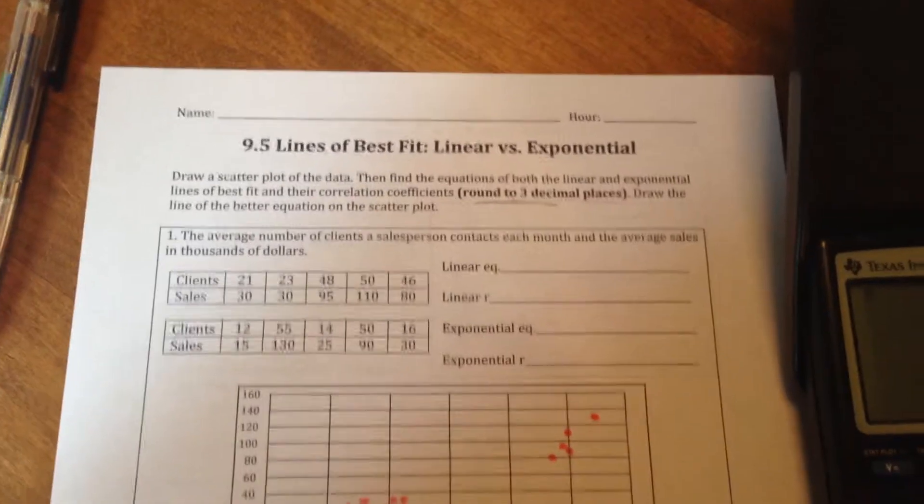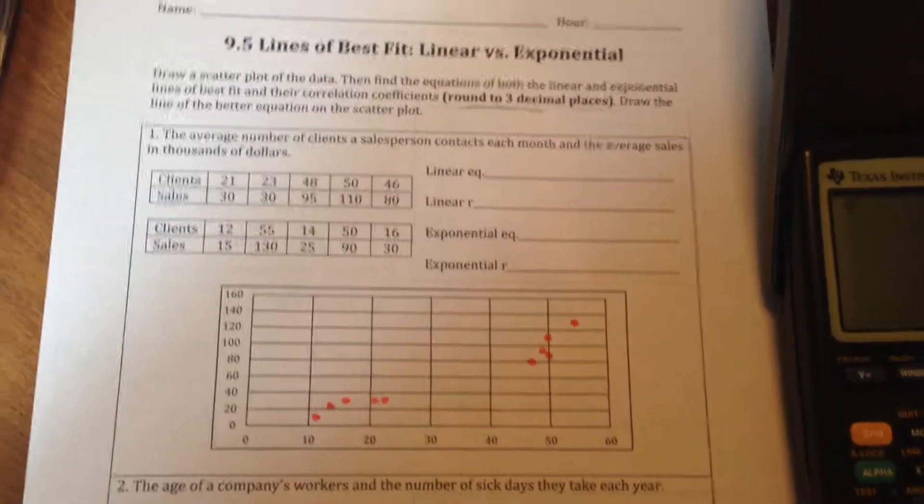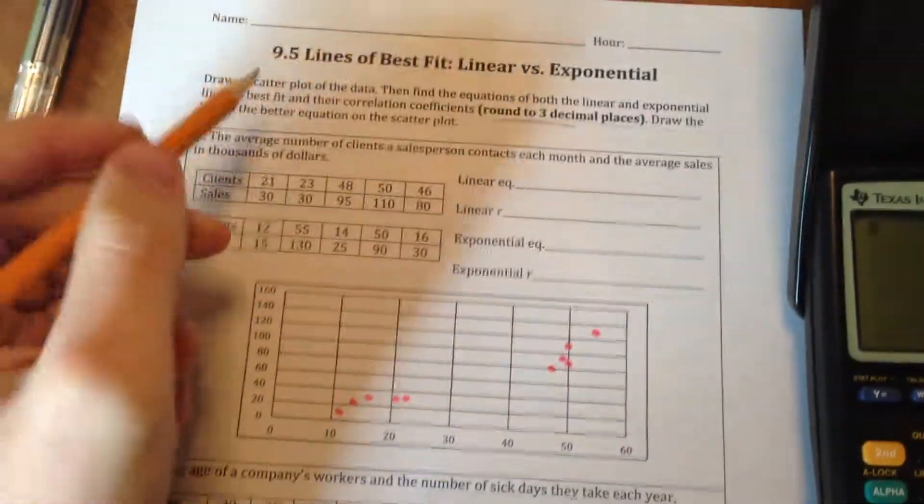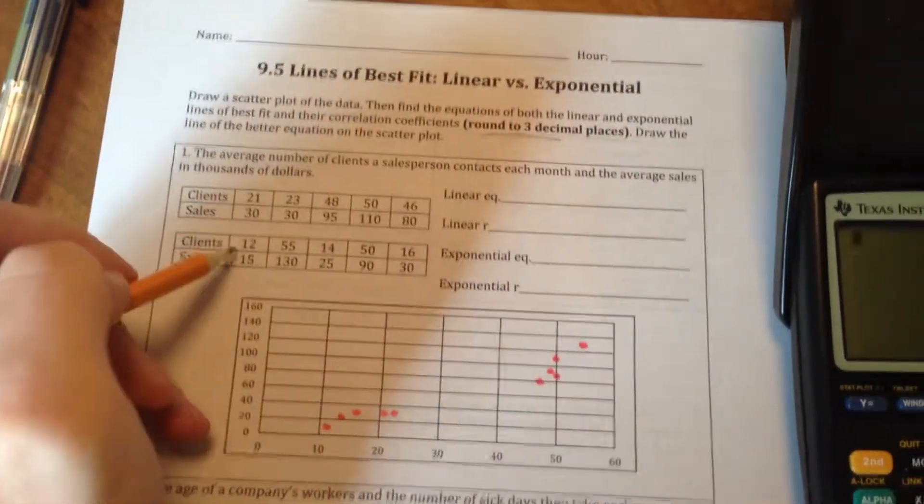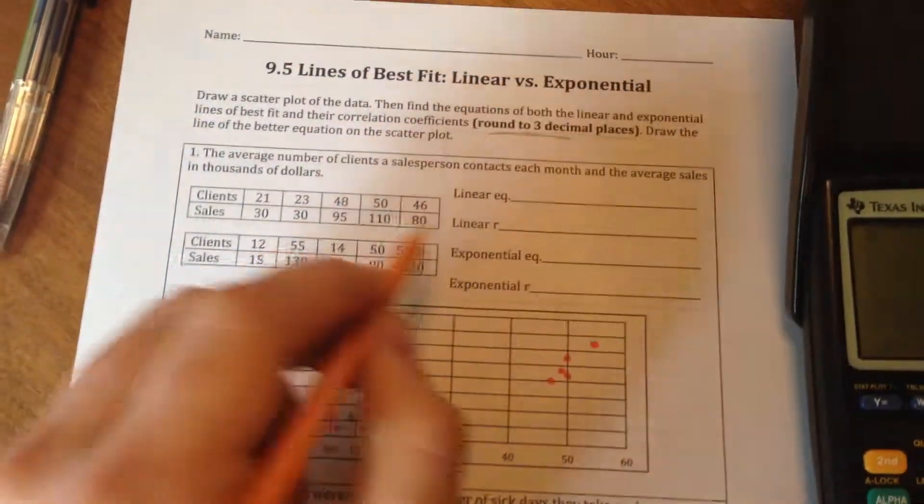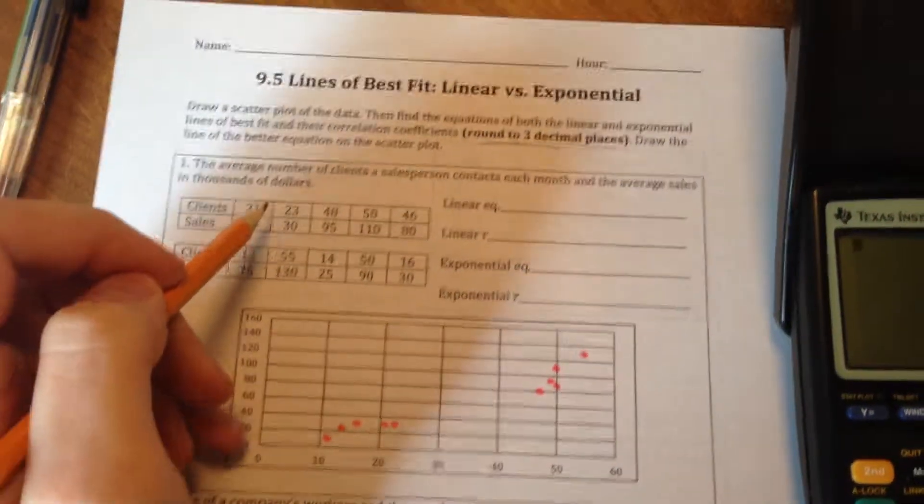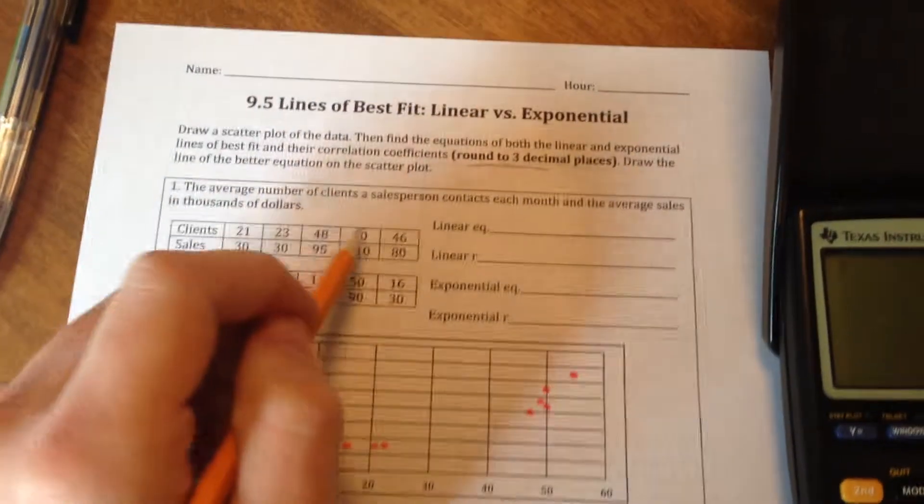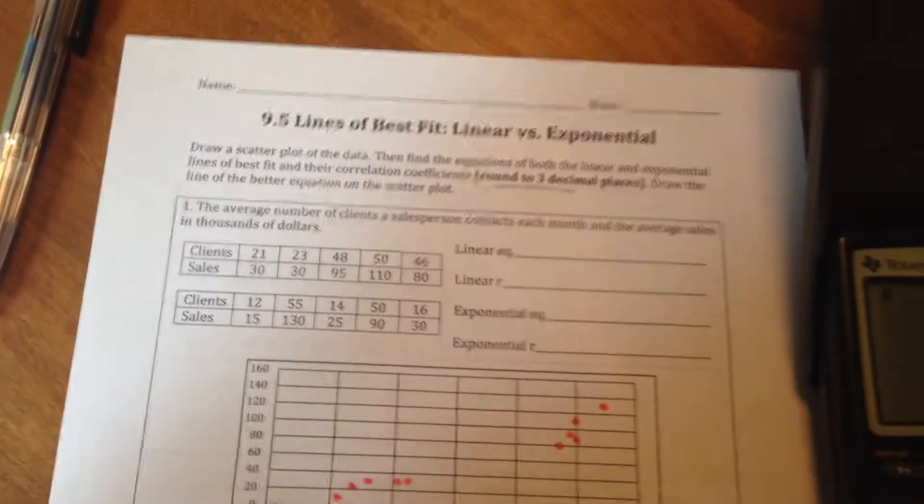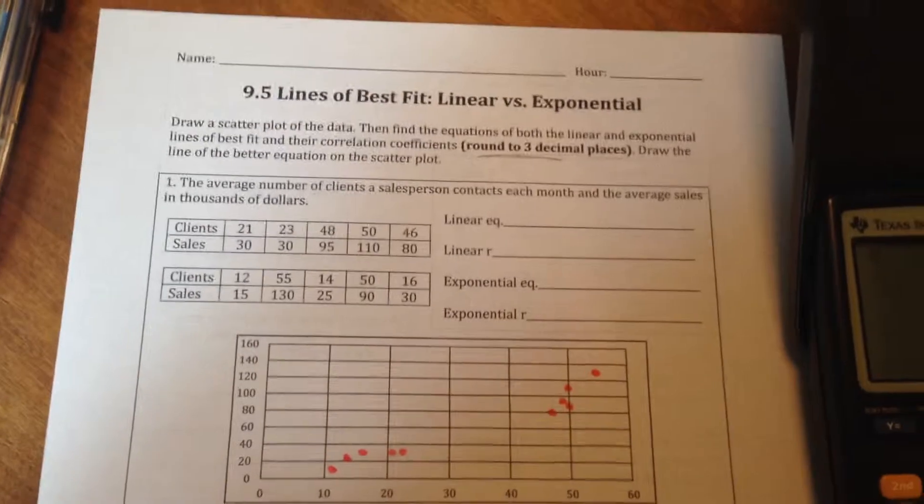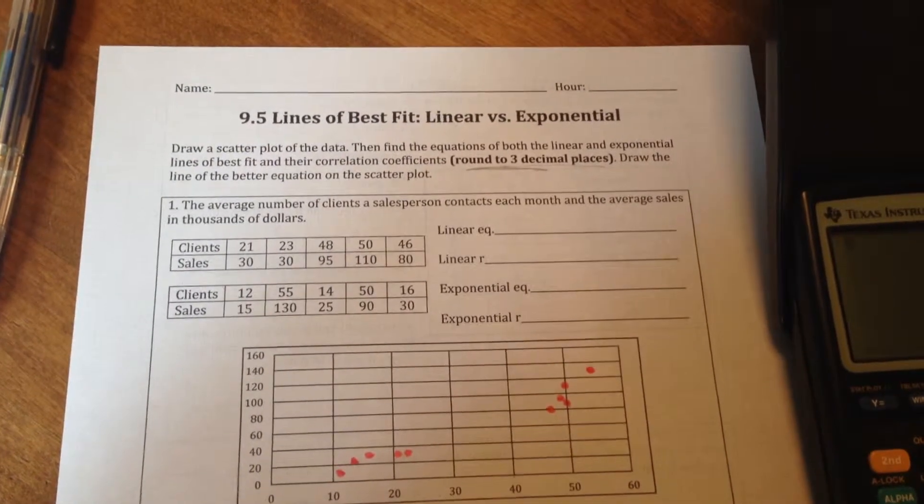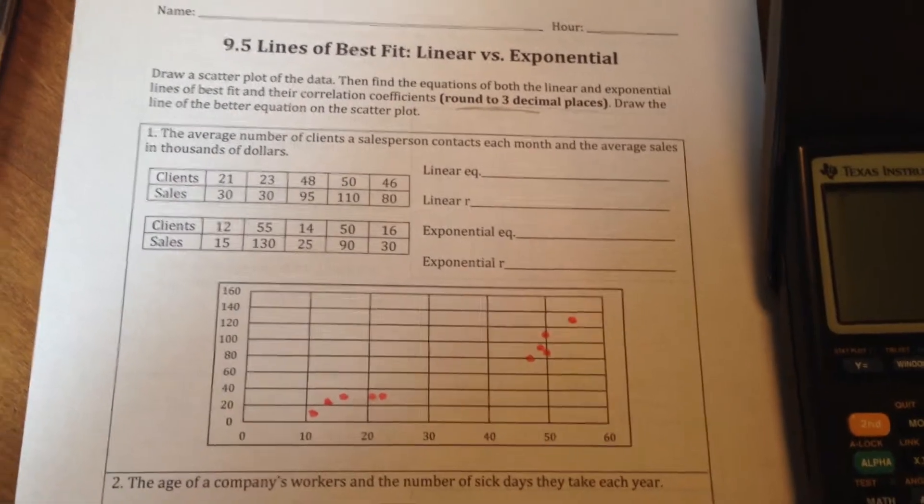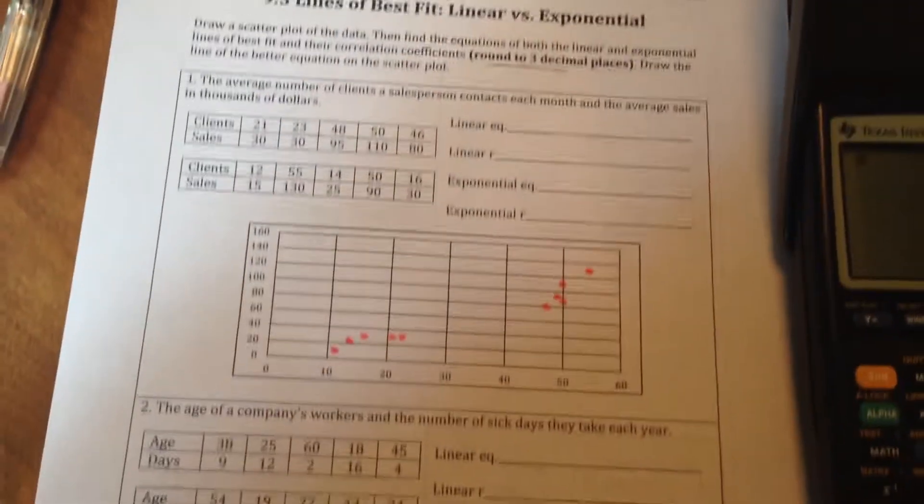And then in the instructions, it's going to ask us to round three decimal places for that. So we'll make sure to do that. And then we need to decide which of those two lines fits our data better. And we're going to draw that into our scatter plot. I've already kind of gotten this started so that I don't bore you guys too much. And so I went ahead and made the scatter plot already.